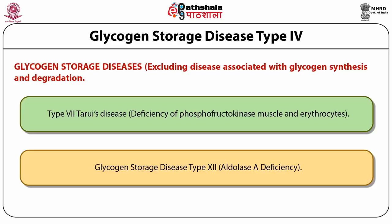GSD type 12 has been recently described and results from a deficiency in aldolase A. Aldolase A catalyzes the reversible conversion of fructose-1,6-bisphosphate to glyceraldehyde-3-phosphate and dihydroxyacetone phosphate. Aldolase A deficiency blocks terminal glycolysis. Aldolase A is primarily found in skeletal muscles and erythrocytes. Clinical features include myopathy with exercise intolerance and non-spherocytic hemolytic anemia. Creatine kinase serum levels tend to be moderate. Treatment is directed towards avoiding exercise and a high-protein diet is suggested.